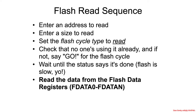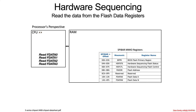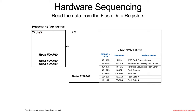Finally, once it says it's done, have your fun and check the flash data registers. Read from flash data 0 for the first 4 bytes, flash data 1 for the next 4 bytes. Because we asked for 16 bytes, we're going to read flash data 0 through 3 in order to get those 16 bytes of data back.